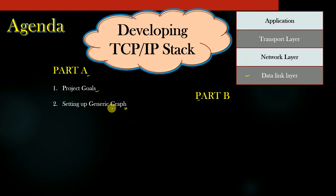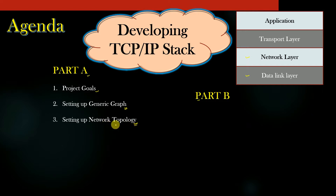In step 3, we will extend this generic graph into a network topology. When I say network topology, it means that the nodes of the graph will represent a routing device — a routing device could be an L3 router, an L2 switch, or a hub. The edges connecting these routing devices will be called links. After step 3, we will have a graph data structure that actually represents a network topology.